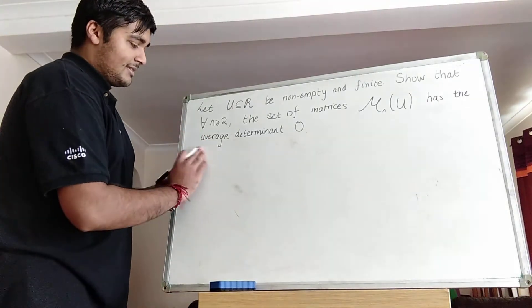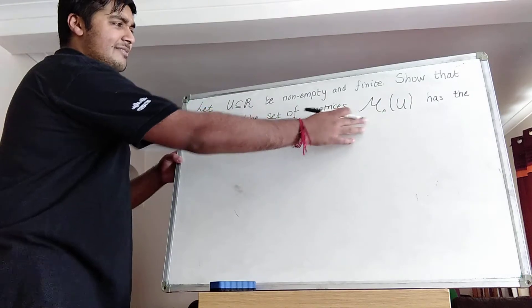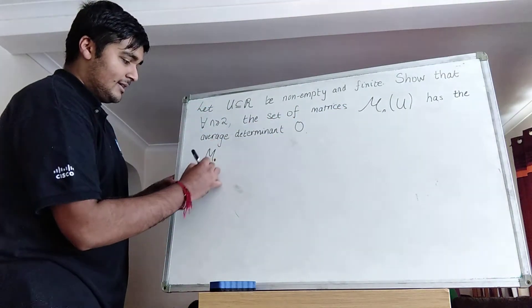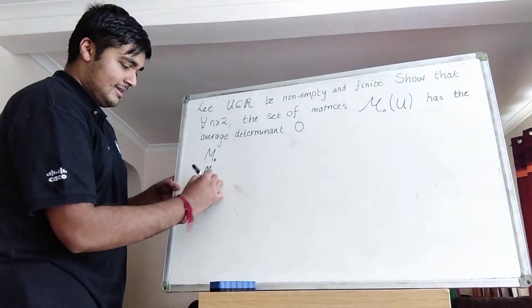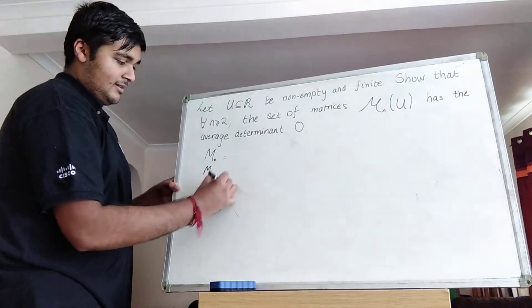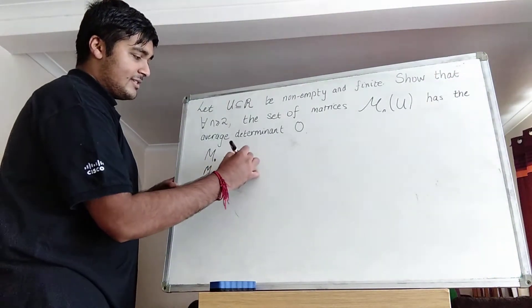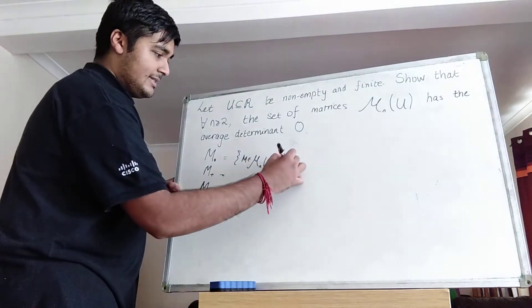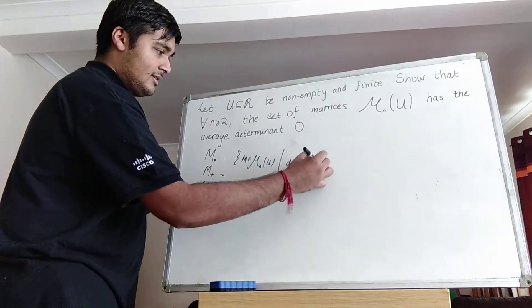Okay, so let me answer this by firstly defining three subsets of M_n(u) which partition it. So M_0, M_plus and M_minus. So this is simply the set of matrices m in M_n(u) for which det(m) equals 0.